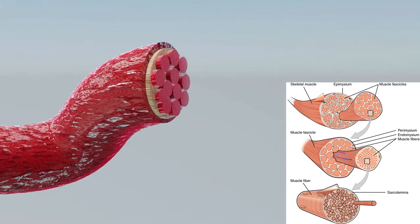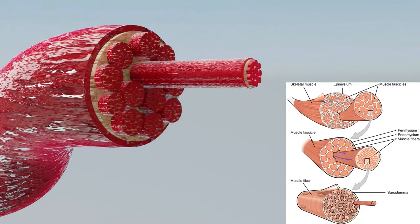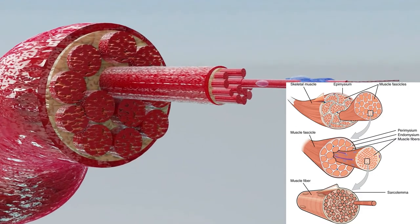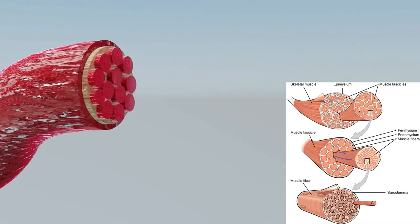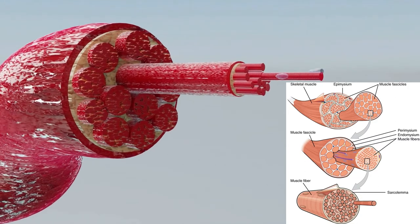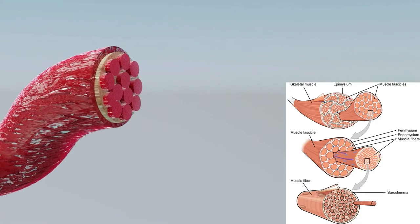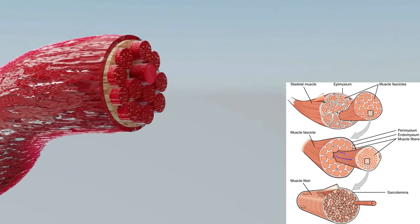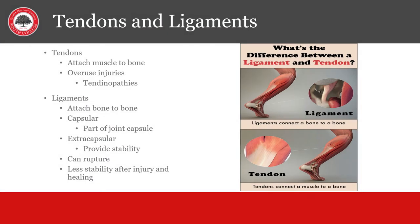Muscles are made up of several elongated segments called fascicles. Each muscle fascicle is made up of several muscle fibers. Epimysium is the outer portion of the skeletal muscle. Perimysium is the outer portion of a muscle fascicle. The endomysium surrounds the muscle fibers. The sarcolemma is the outer portion of a muscle fiber. Tendons connect muscles to bones, while ligaments connect bone to bone. Both can become injured with overuse or overstretching.